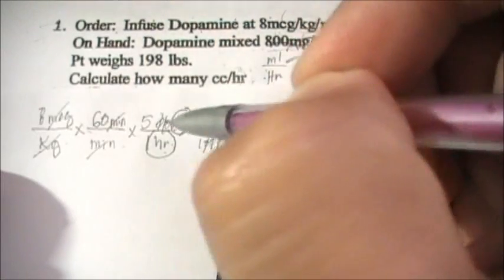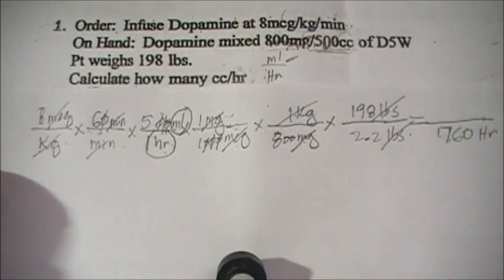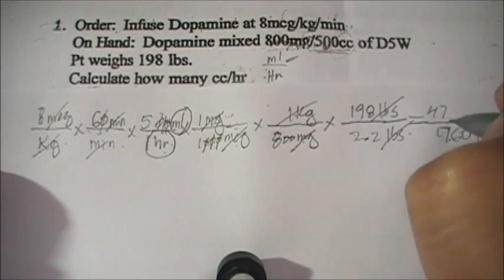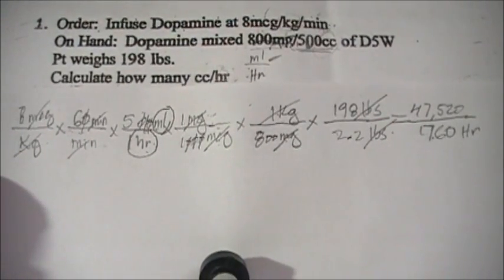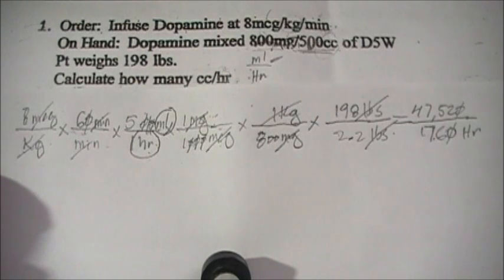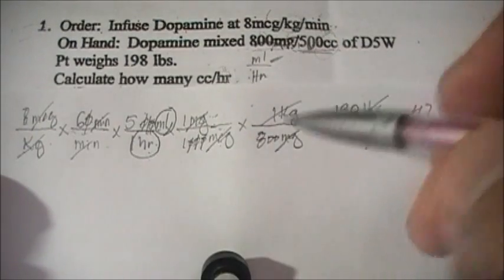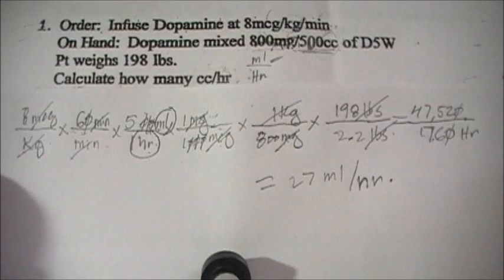We canceled three zeros total. Now multiply the remaining numerator values: 8 × 6 × 5 × 198 = 47,520. Cancel one more zero against the denominator, leaving 4,752 divided by 176, which equals 27 mL per hour. So your answer is 27 mL per hour. There is another solution for this problem which will be discussed later.